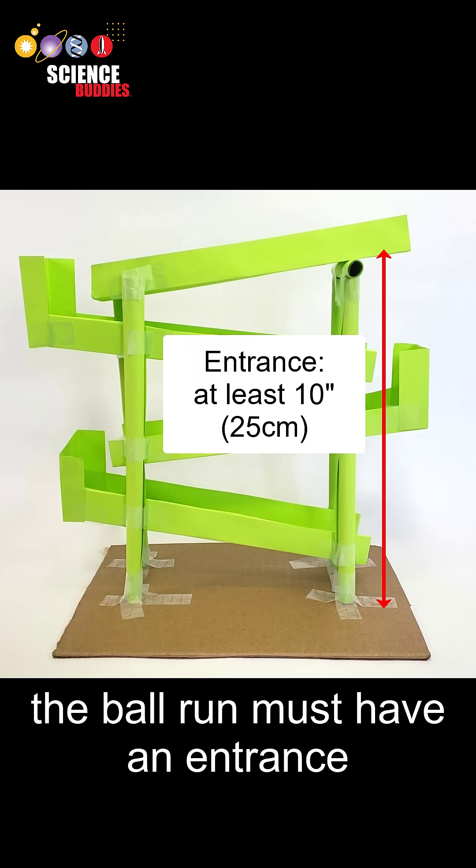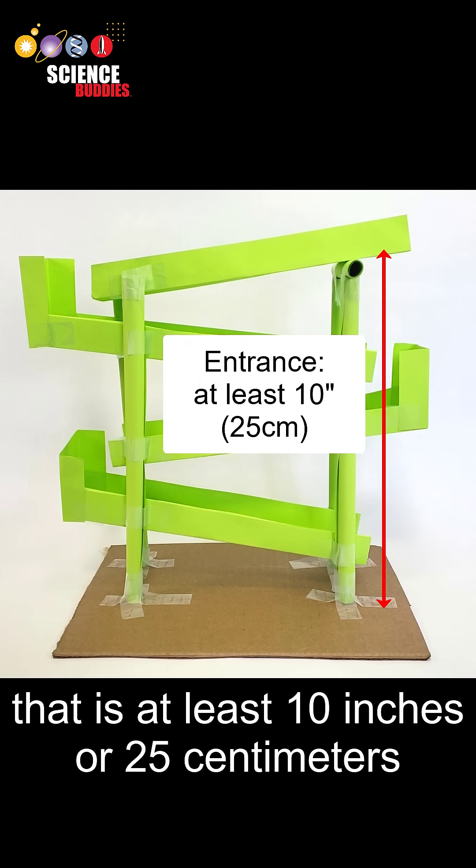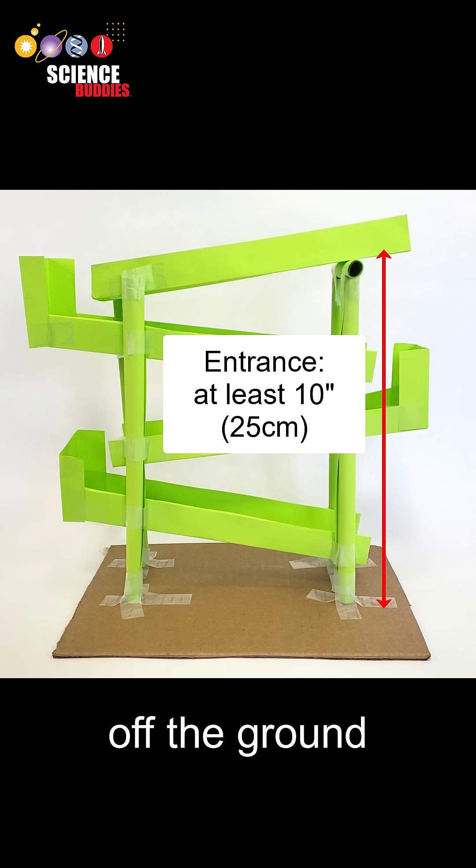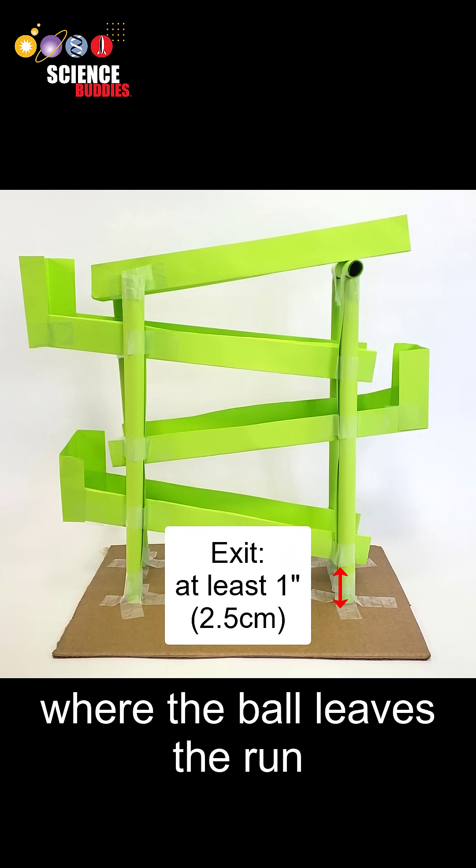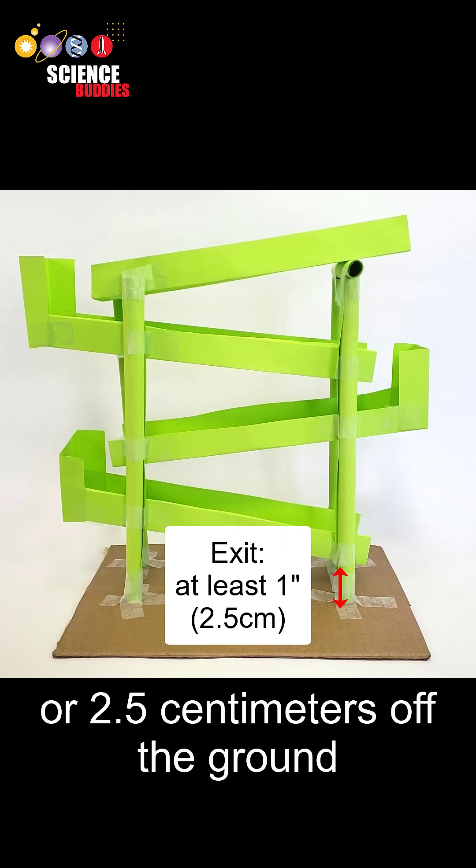The ball run must have an entrance, where the ball first touches the run, that is at least 10 inches or 25 centimeters off the ground, and an exit, where the ball leaves the run, that is at least 1 inch or 2.5 centimeters off the ground.